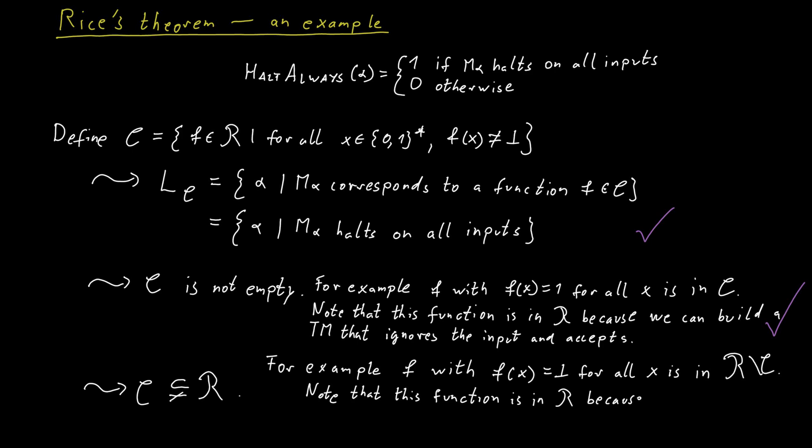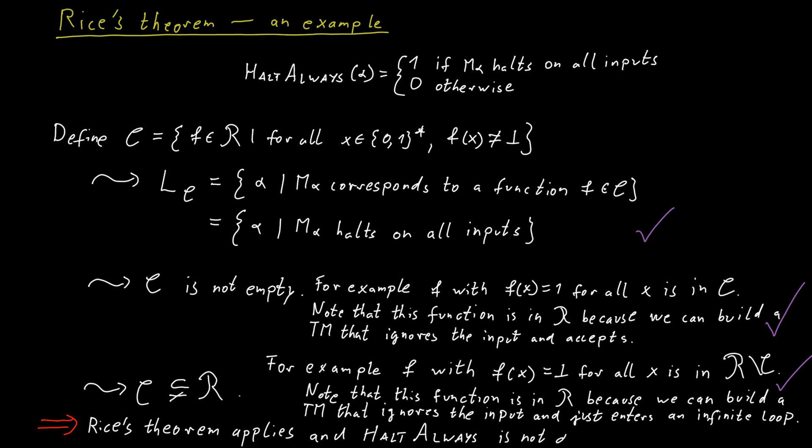We can easily build such a Turing machine because we would just ignore the input and let the Turing machine enter into an infinite loop. So due to Rice's Theorem, we now know that HALT ALWAYS is not decidable.